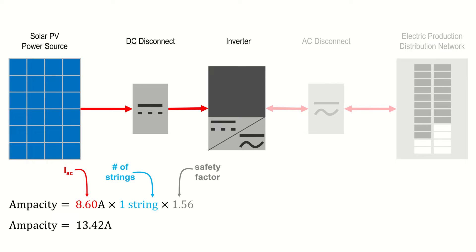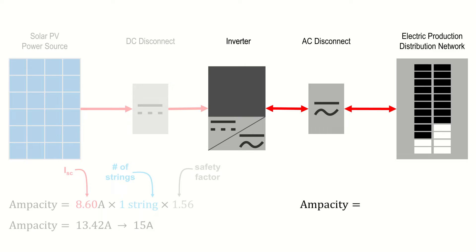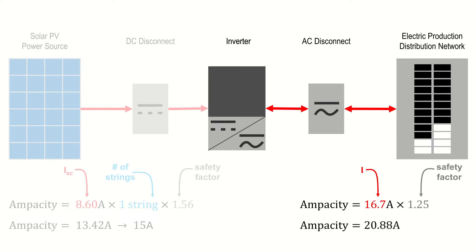As you can see in this example, we have an ampacity of 13.42 amps, so we would need to select a 15 amp fuse. The ampacity calculation changes on the AC side of the circuit. In that case, we'd use the maximum or continuous output current for the inverter and multiply that by 1.25. If, for instance, your inverter has a current output of 16.7 amps, then you would simply multiply by 1.25, yielding an ampacity value of 20.88 amps. In this case, we'd need to select a 25 amp fuse on the AC output side. For the AC disconnect itself, you'd likely choose a 30 amp two-pole model. If your inverter was transformerless, then you'd likely select a 3-pole model in order to fuse the neutral conductor.